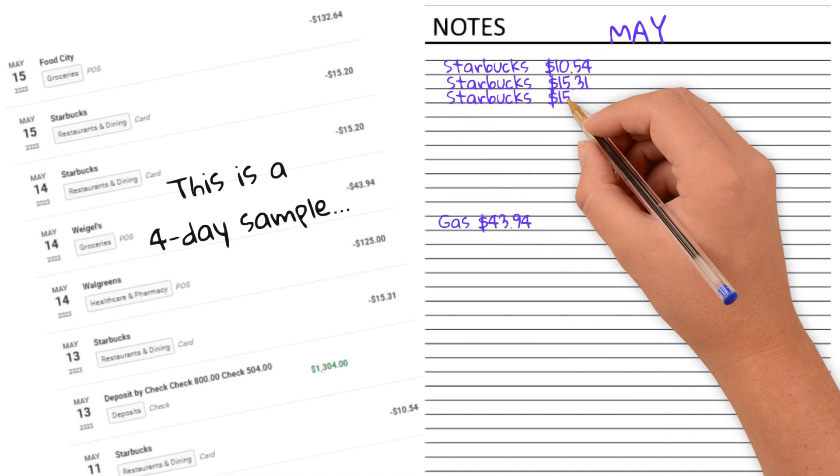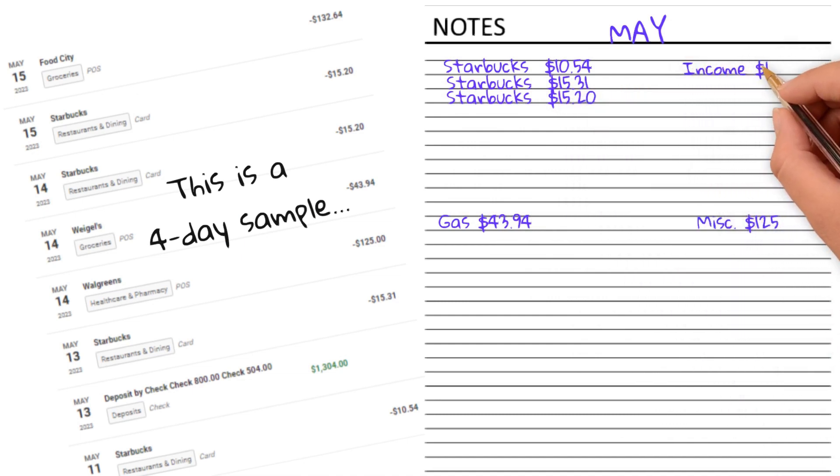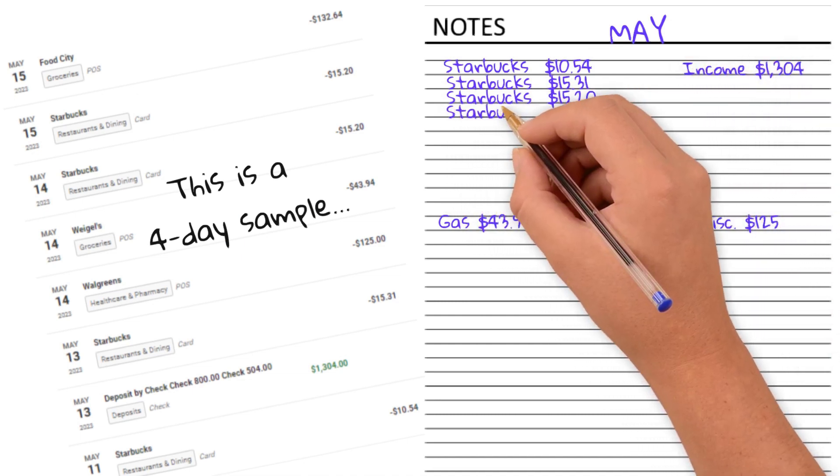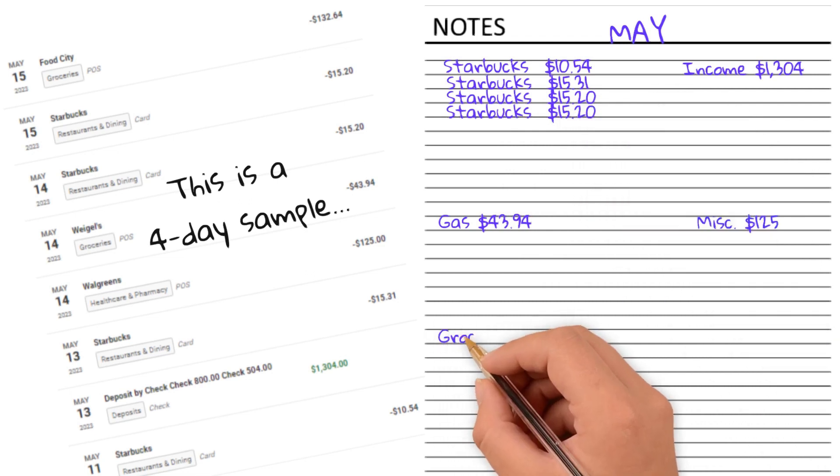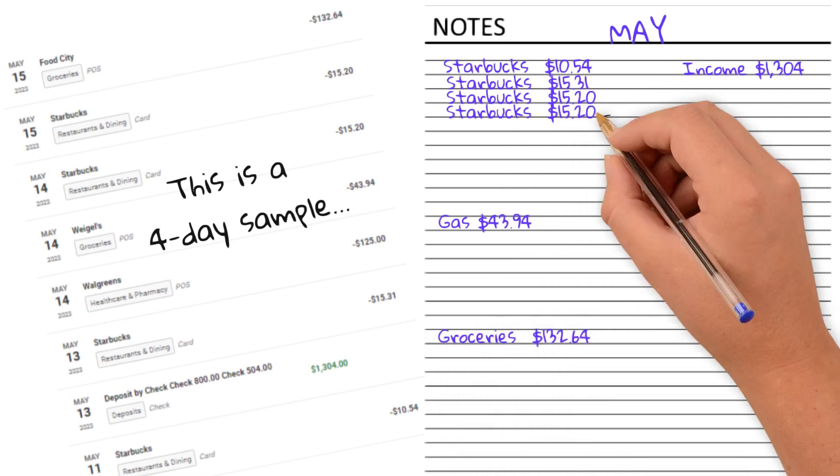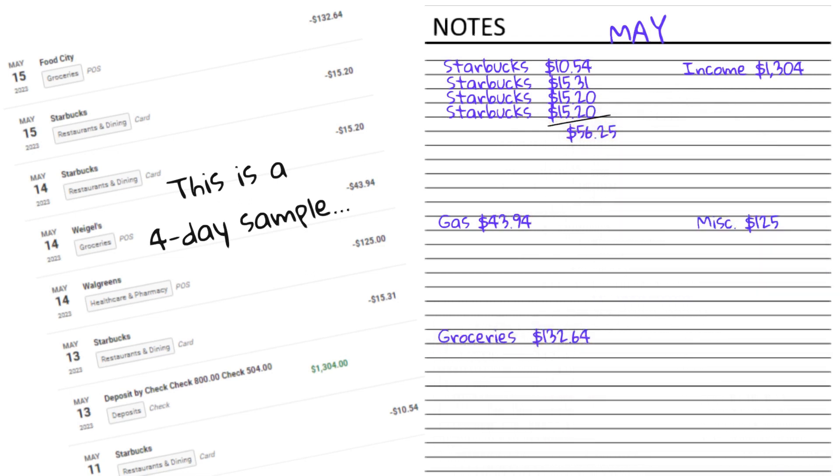And I will also make a list for my income because our income is also variable. So I'll take a look for those three months, what our income was, and what were we spending every single penny on for that particular month.